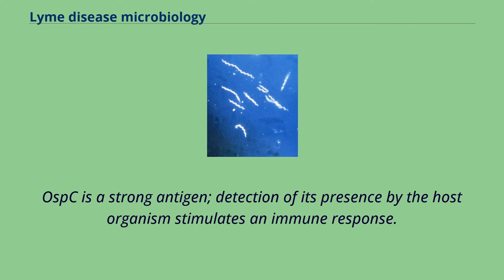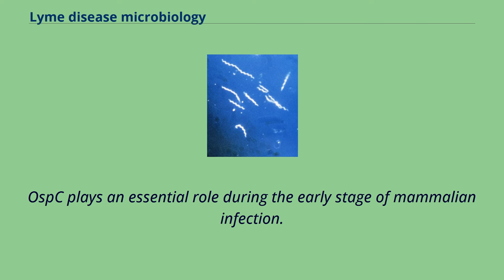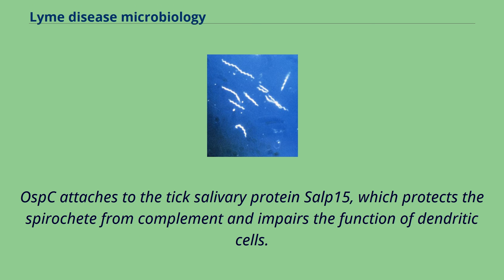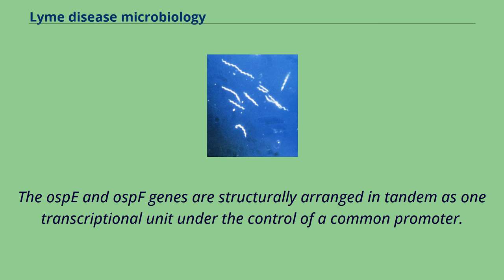OSPC is a strong antigen; detection of its presence by the host organism stimulates an immune response. While each individual bacterial cell contains just one copy of the OSPC gene, the gene sequence of OSPC among different strains within each of the three major Lyme disease species is highly variable. OSPC plays an essential role during the early stage of mammalian infection. In infected ticks feeding on a mammalian host, OSPC may also be necessary to allow B. burgdorferi to invade and attach to the salivary gland after leaving the gut, although not all studies agree on such a role for the protein. OSPC attaches to the tick salivary protein SALP-15, which protects the spirochete from complement and impairs the function of dendritic cells. OSPD and OSPE were initially identified in B. burgdorferi strain N40. The OSPD and OSPE genes are structurally arranged in tandem as one transcriptional unit under the control of a common promoter.